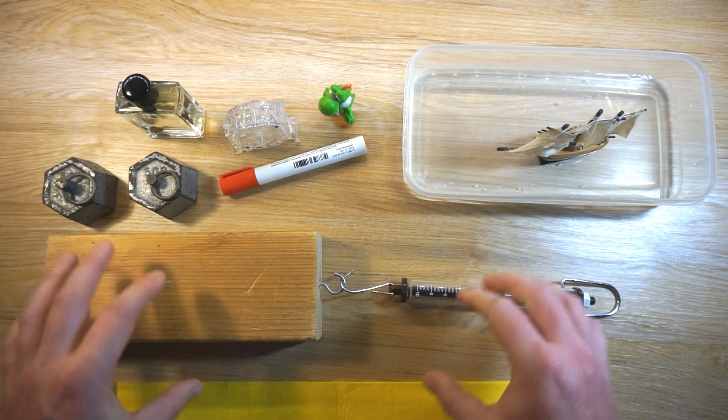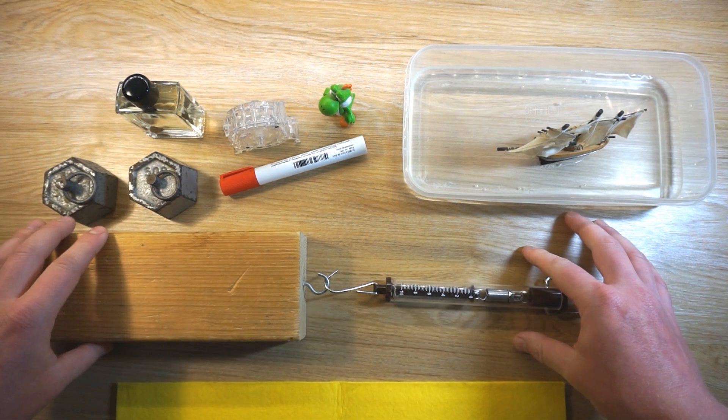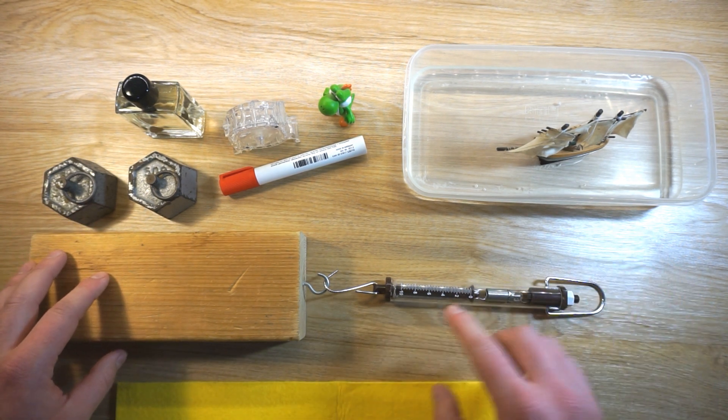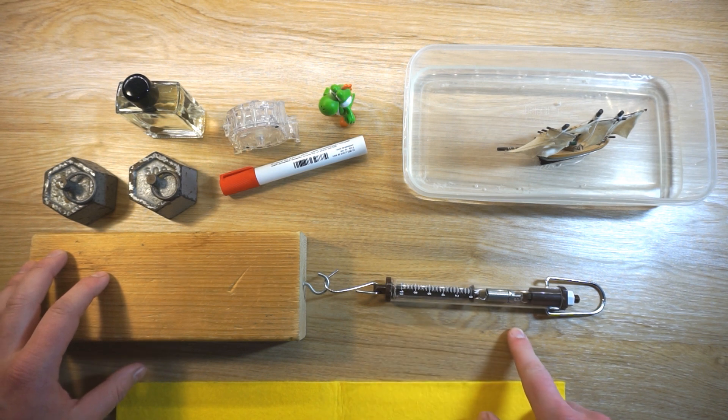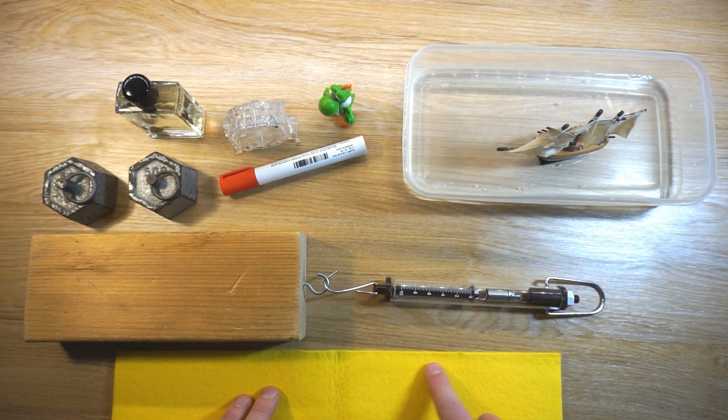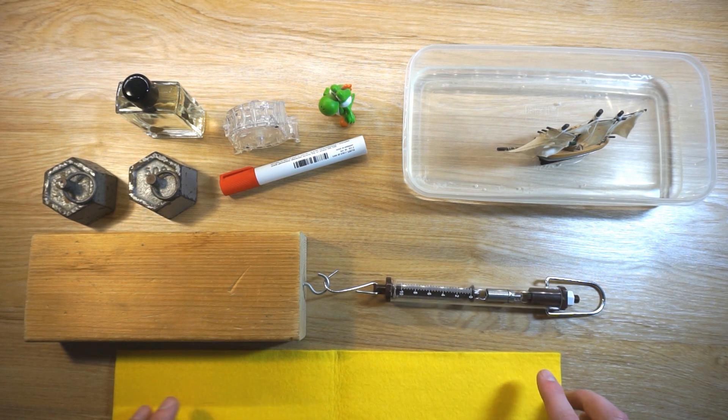Another factor that influences the amount of friction is the type of surface. A smooth surface lets things glide very easily along it, whereas a lot of energy is wasted traveling on a rough surface because of the increased amount of friction.